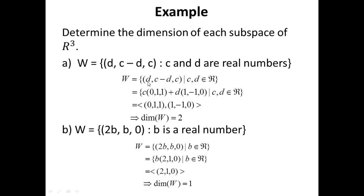So what we do is we start off by writing W as the set defined as such. The first component is d, the second component c minus d, the third component c where c and d are real numbers.